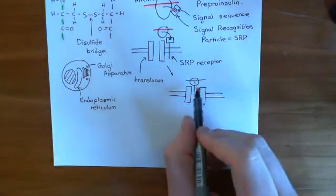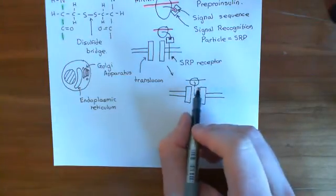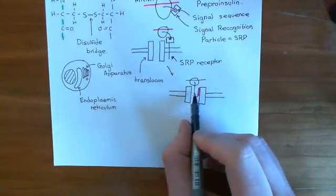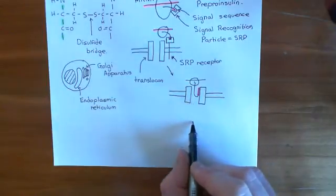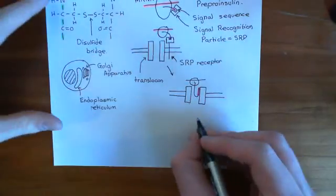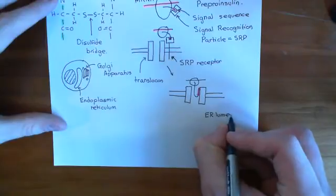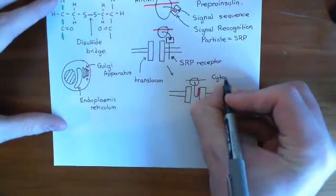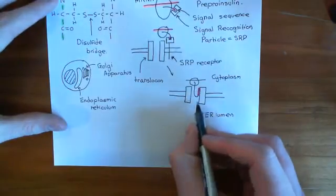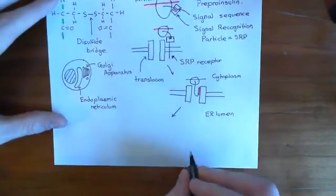Once you've got this situation, the ribosome will continue translation — translation will be resumed and you will synthesize the rest of this protein. As you're synthesizing it, it will be fed through the tube in the translocon into the ER lumen. This side is the ER lumen, whereas where the ribosome is currently is the cytoplasm.